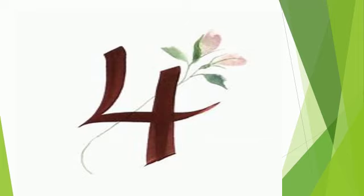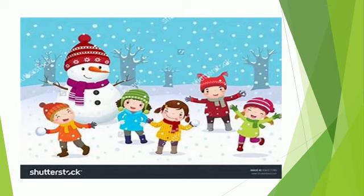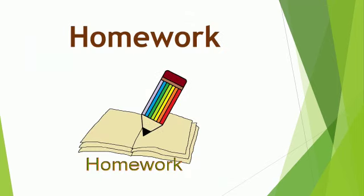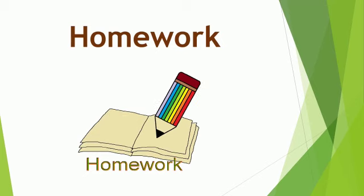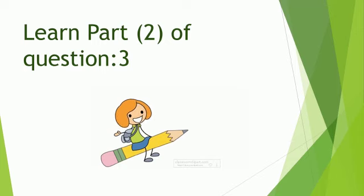How many seasons are there? Four. Spring, summer, autumn and winter. You all are very nice children. Now dear students, it's time to do homework. Aap sab ne homework bhi kerna hai. You have to learn part 2 of question 3 which is name four seasons. The first one is spring, the next is summer, the third one is autumn, and the fourth one is winter.